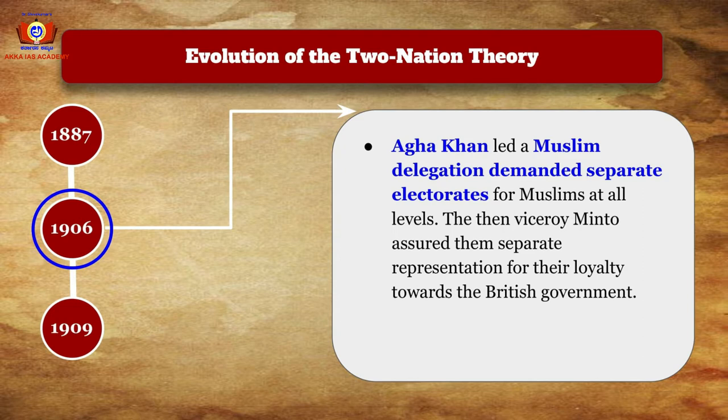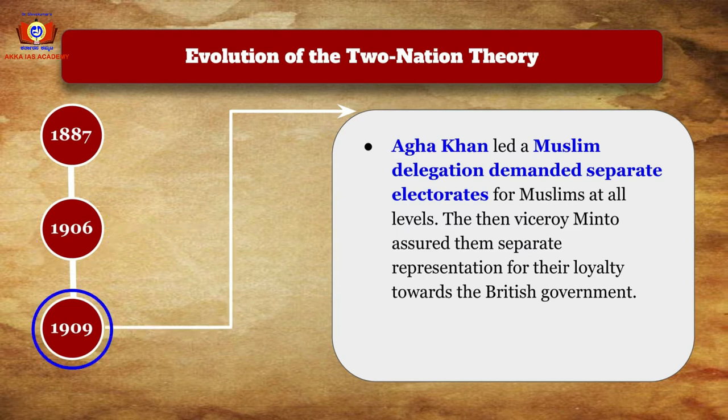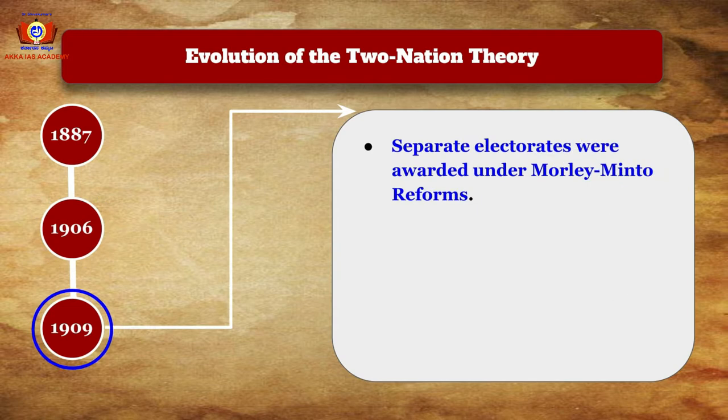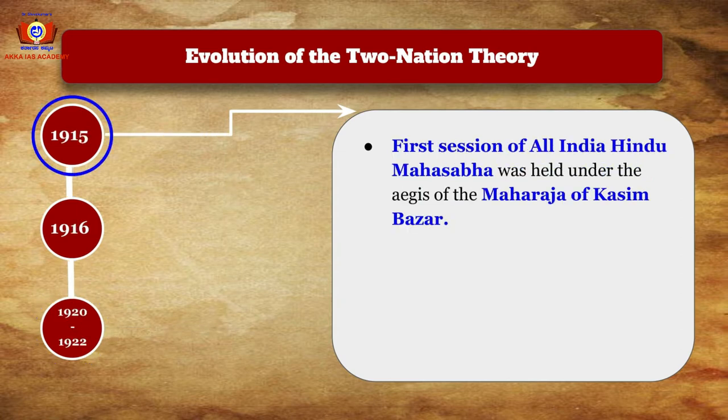The Viceroy Minto assured them separate representation in exchange for their loyalty towards the British government. This was an attempt by Lord Minto to divide national forces along religious lines, and they succeeded. In 1909, separate electorates were awarded to Muslims under the Morley-Minto Reforms. To counter the Muslim League, the Hindu Mahasabha was formed.